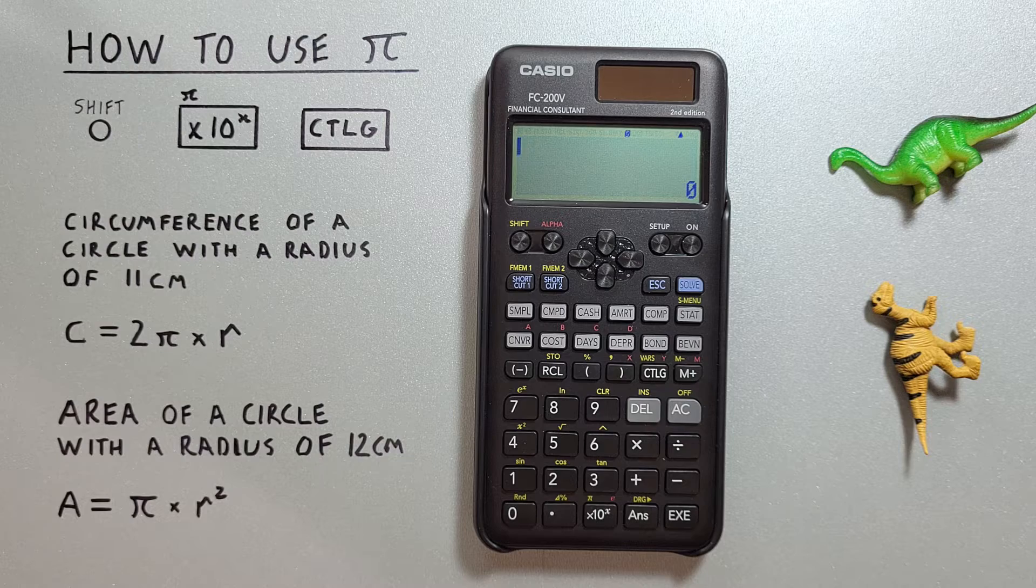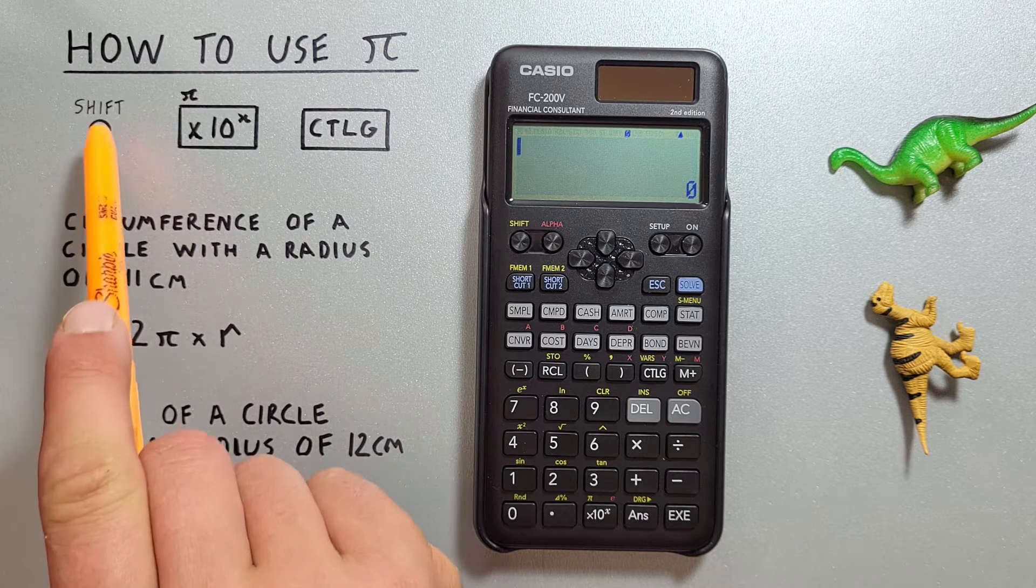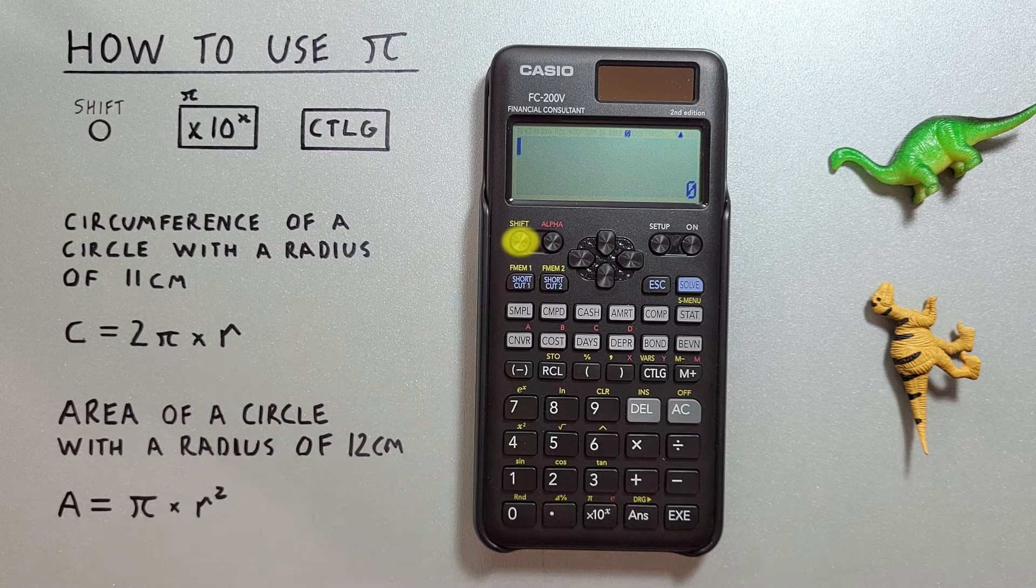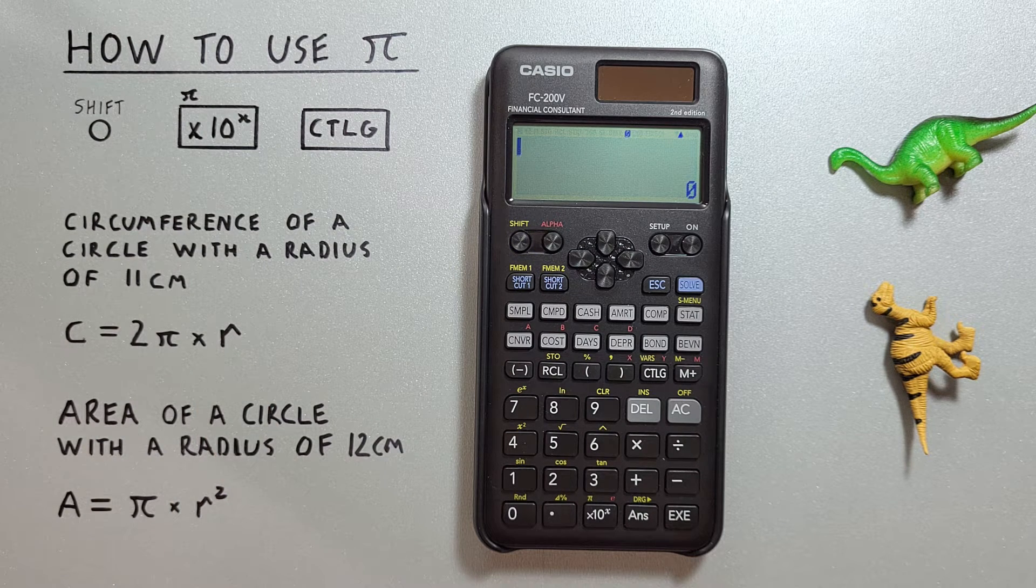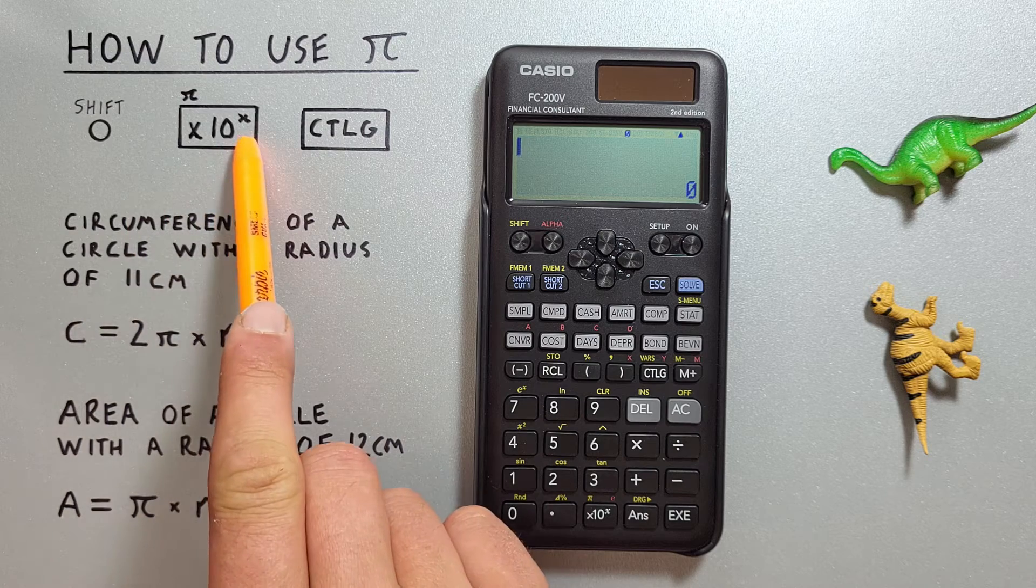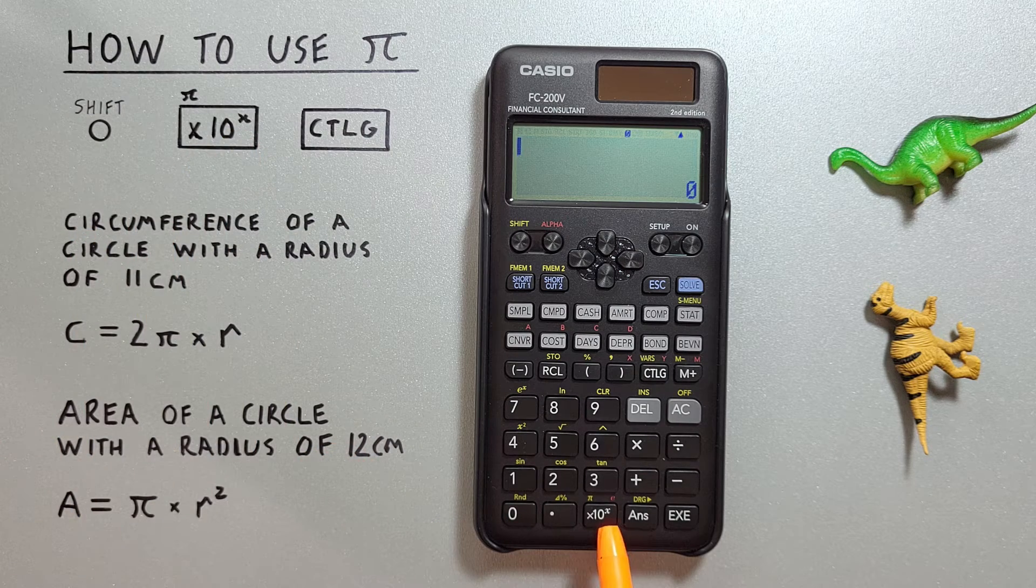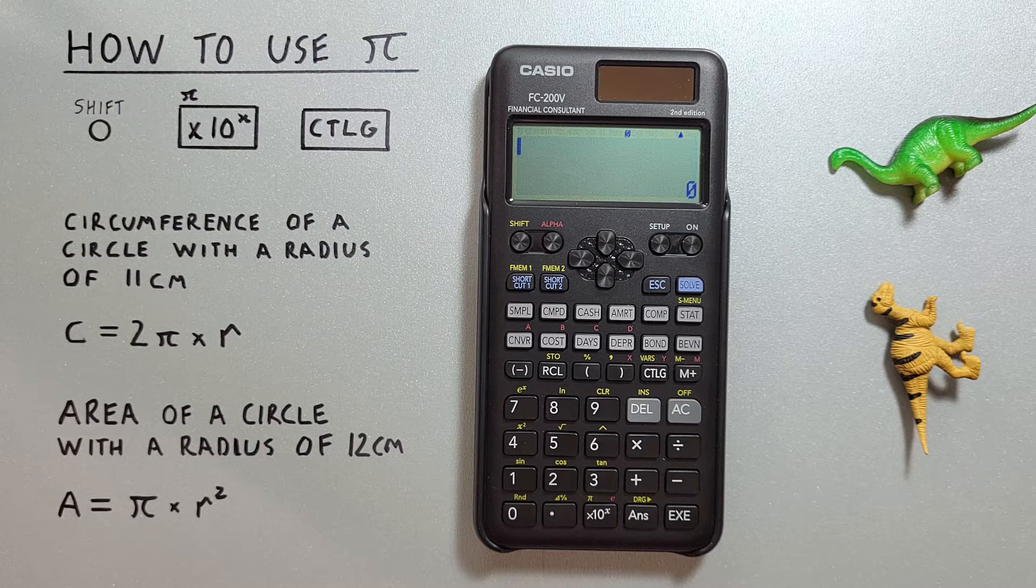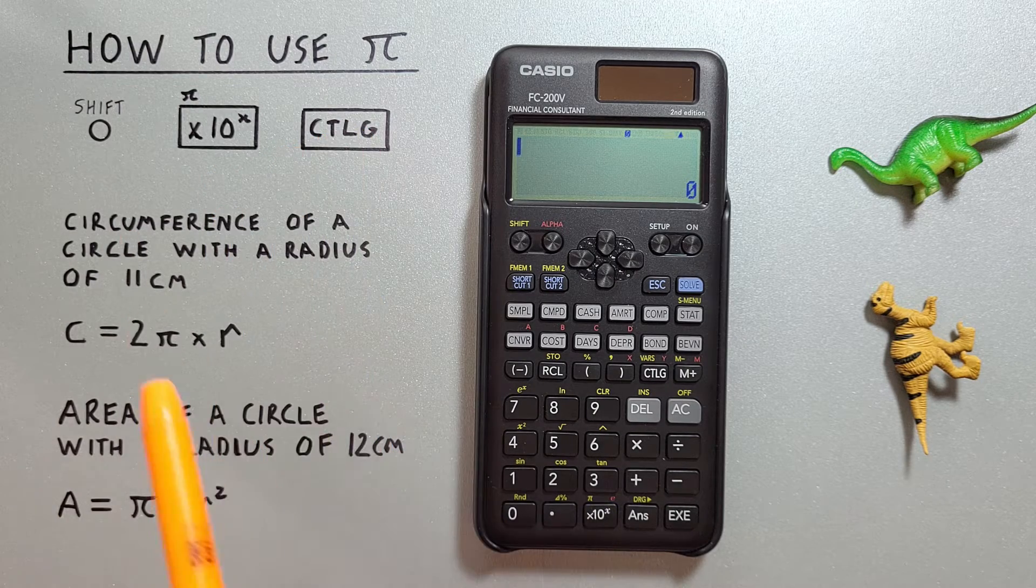To do this we'll use the shift key that looks like this, located here, the x10 to the x key with the shift function of Pi that looks like this, located down here, and the catalog key that looks like this, located here.